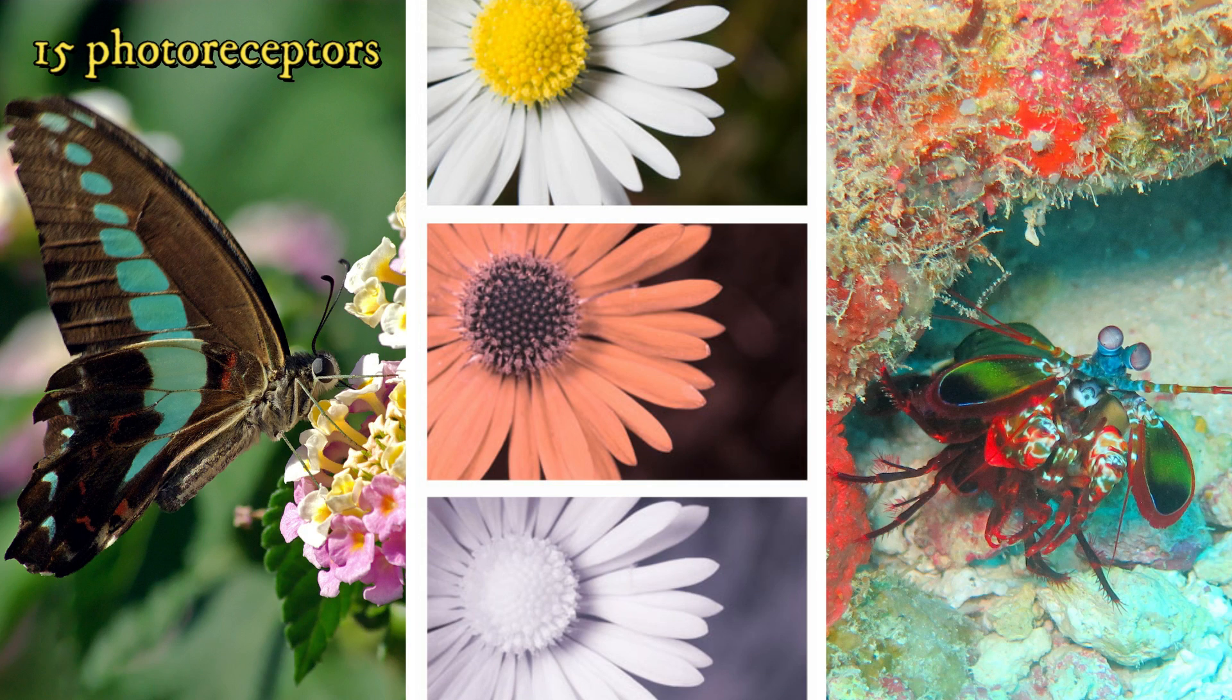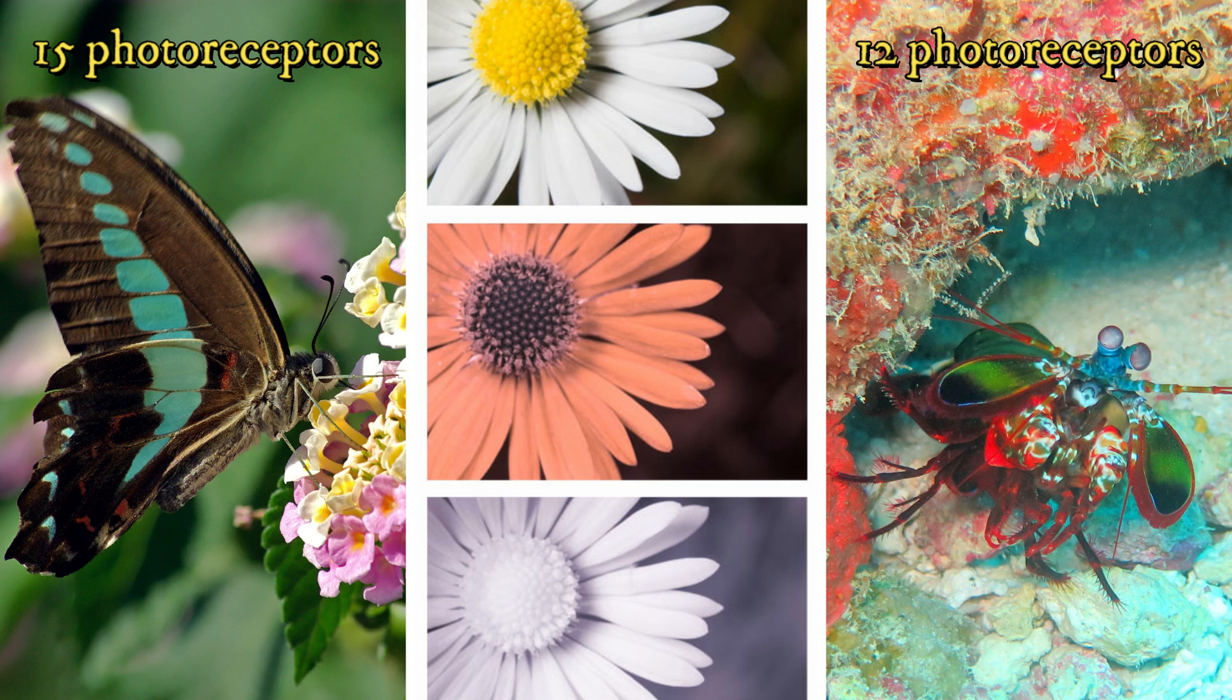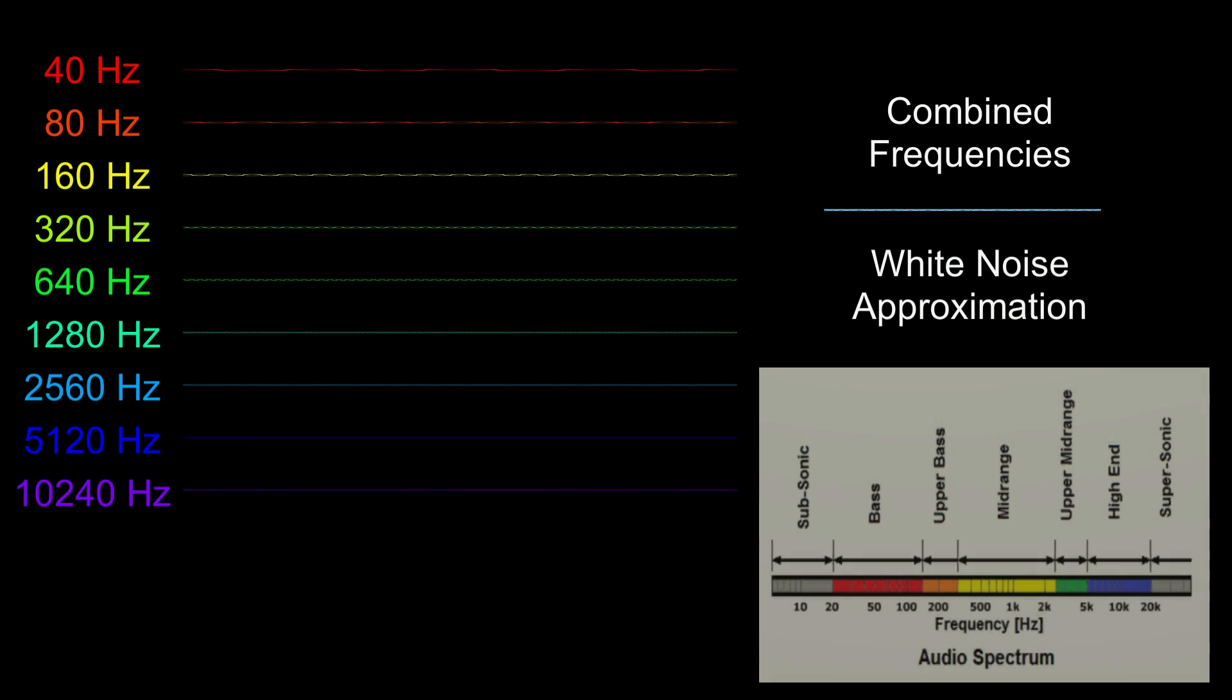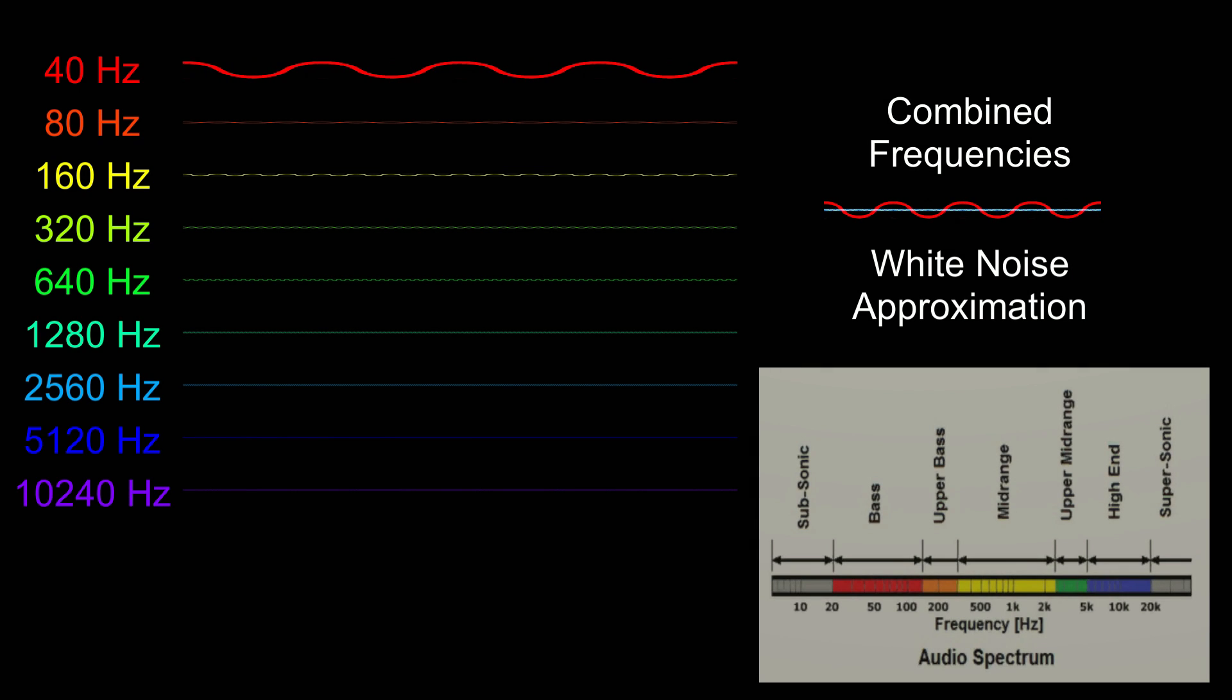Finally, note that there are some animals that can actually see parts of the electromagnetic spectrum that we humans cannot. That's all we're touching on in terms of light for this video. We'll now discuss sound and point out the similarities between the discrete rainbow representing light and the piano representing sound.